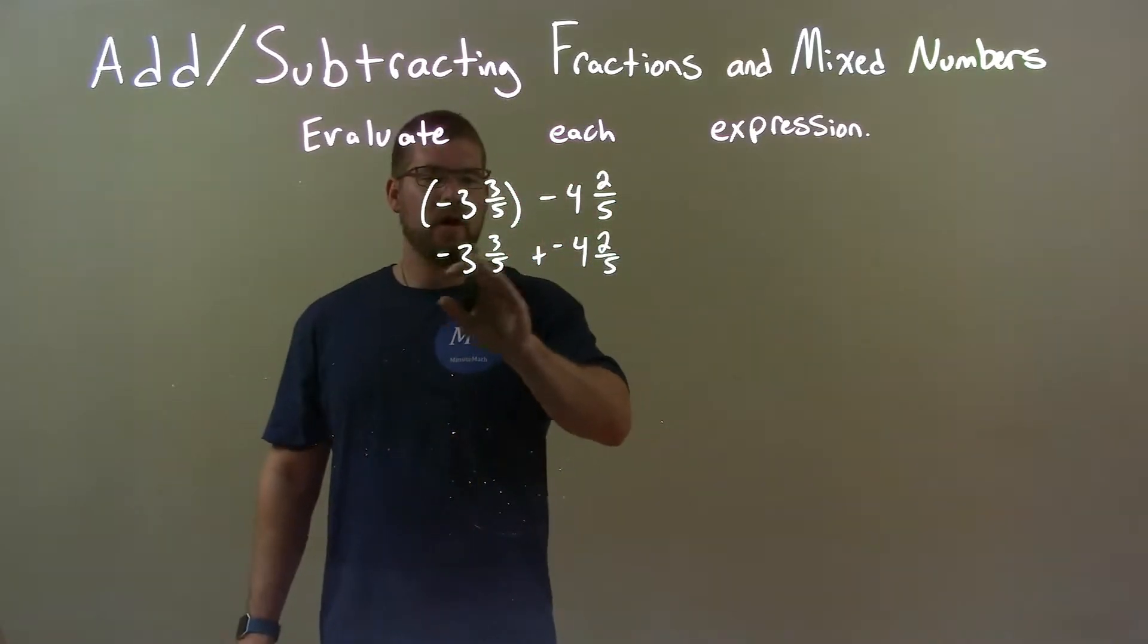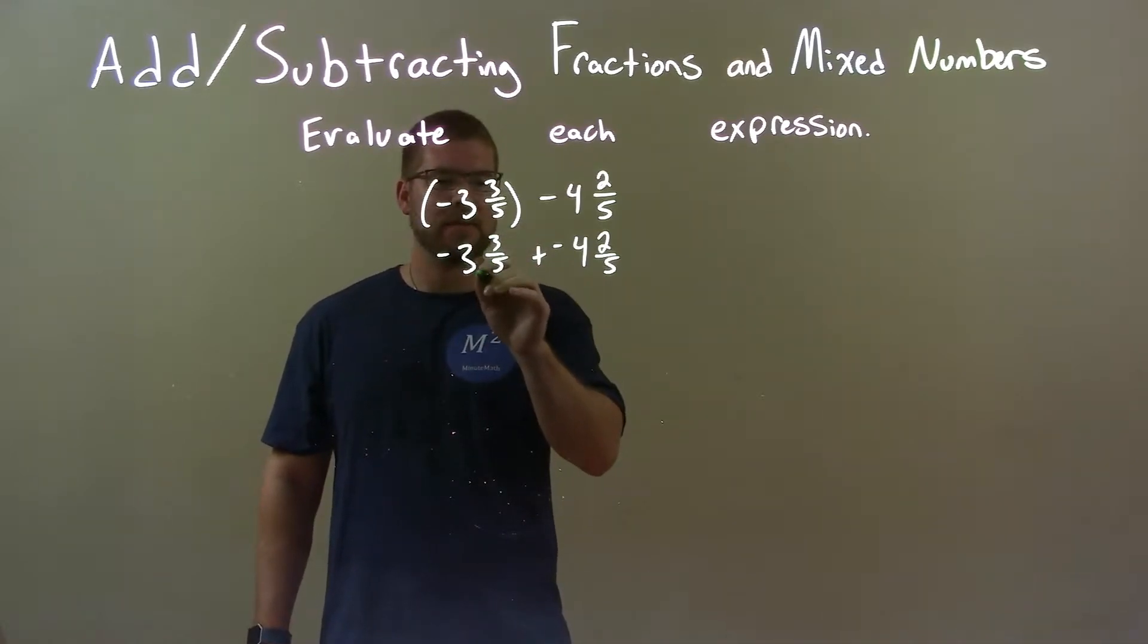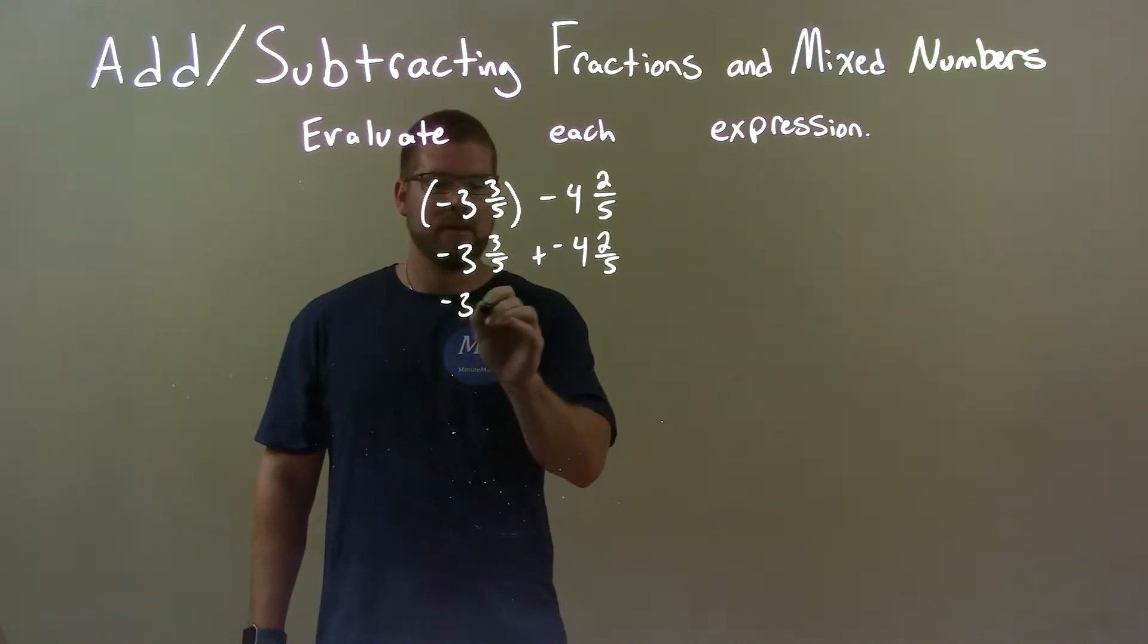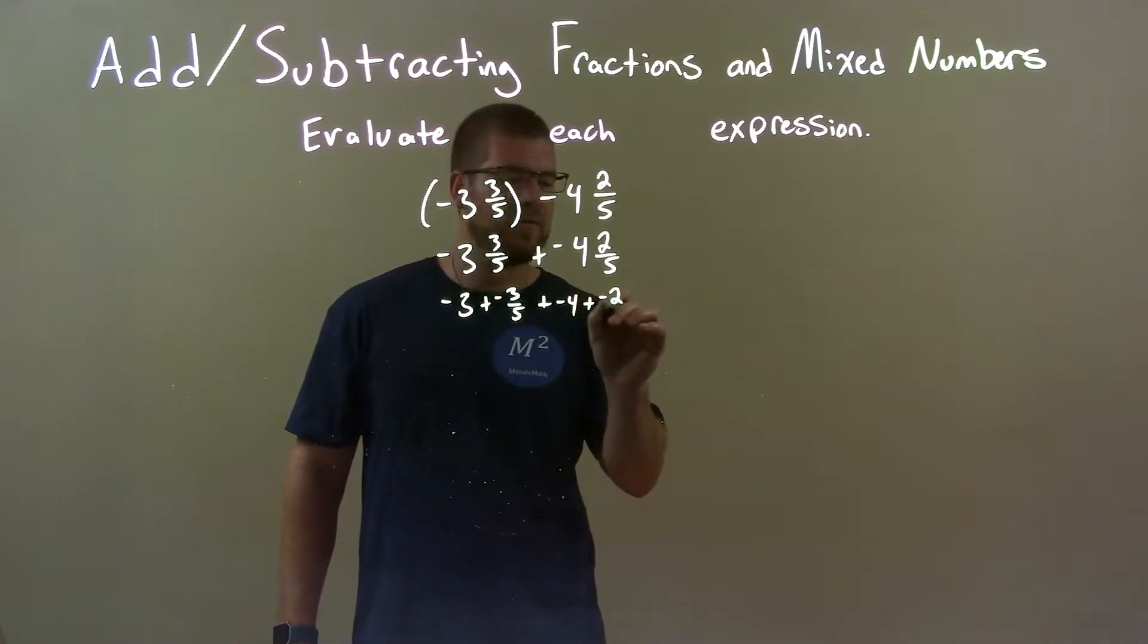Since we're dealing all with negatives here and we have a mixed fraction, what we can do is separate this up. And so, negative 3 plus a negative 3 fifths plus a negative 4 plus a negative 2 fifths.